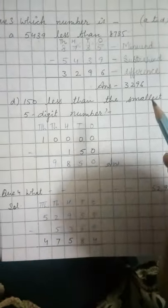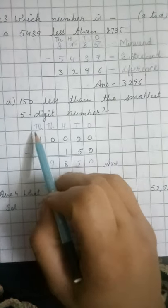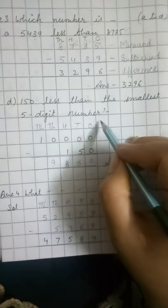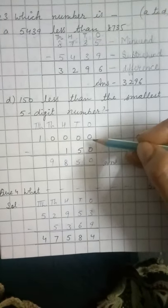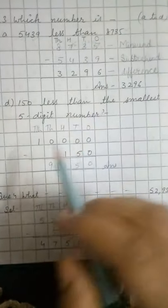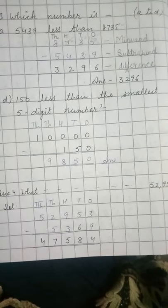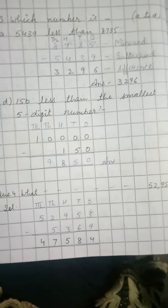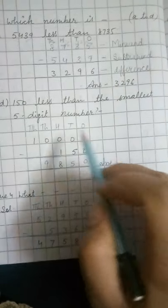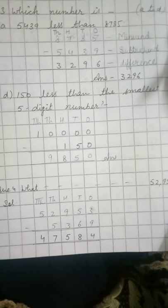We always have to arrange our number as per their place value. You will always write place value on top and arrange your numbers according to it. Which is the smallest 5-digit number? It is 10,000. 1, 0, 0, 0, 0. 10,000 is the smallest 5-digit number.